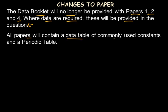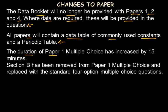All papers will contain a data table of commonly used constants and a periodic table at the end of the question paper. Additionally, the duration of Paper 1 (multiple choice) is increased by 15 minutes — it was previously one hour and is now one hour and 15 minutes. Also in Paper 1, the Section B where three options were given and multiple answers had to be chosen is now removed; all questions will be straightforward multiple choice with 30 questions.